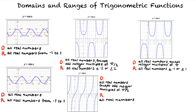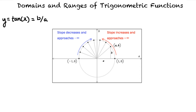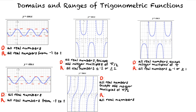The value of tangent of x equals B divided by A is the slope of the line joining the origin and the point A comma B. The slope is positive for x between 0 and pi over 2, and negative for x between pi over 2 and pi. As x increases from 0 and approaches pi over 2, the slope increases and approaches positive infinity, meaning tangent of x can be 0 or any positive number. As x decreases from pi and approaches pi over 2, the slope approaches negative infinity. Therefore, the range of y equals tangent of x is the set of all real numbers.